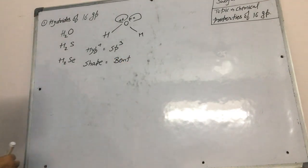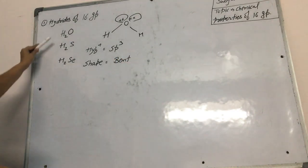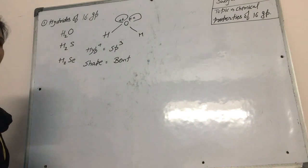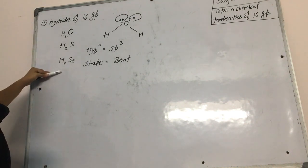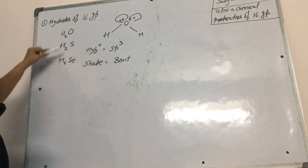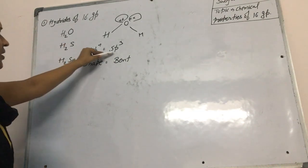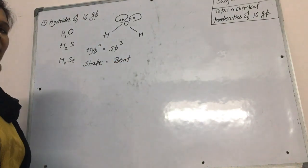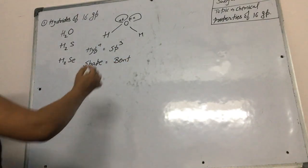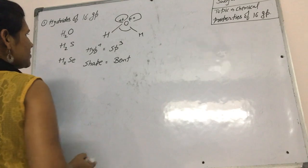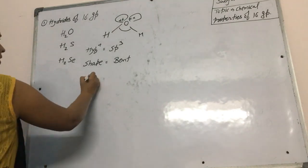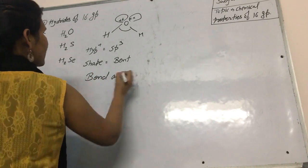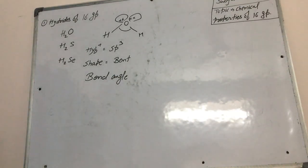Students, there are many hydrides in Group 16. They all have the same bent shape and sp3 hybridization because of the same arrangement. But the most important point, students, is that in their structures, their bond angle will continuously change from top to bottom.